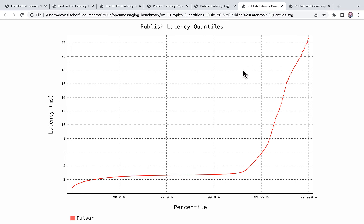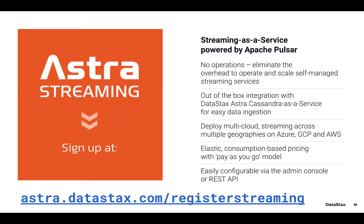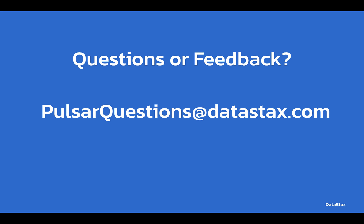We see really good publishing results. I hope you found this video useful — if you did, please click the like button, which will help other people find this video. If you'd like to try Astra Streaming, the cloud Pulsar-as-a-service offering from Datastacks, you can sign up for a free account at astra.datastacks.com/register-streaming. If you have any questions or feedback, leave a comment below or email us at pulsarquestions@datastacks.com. Thanks for watching and have a great day.